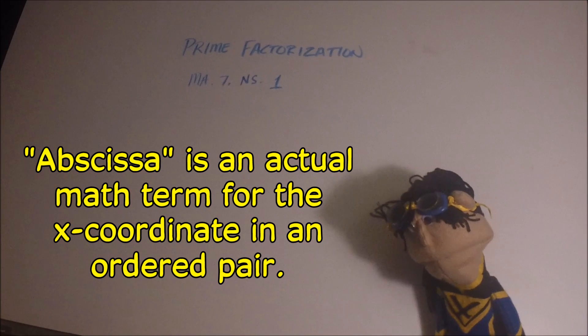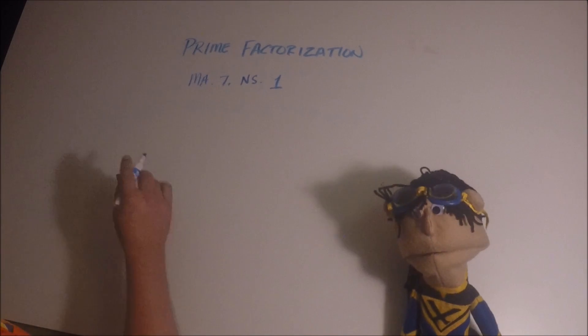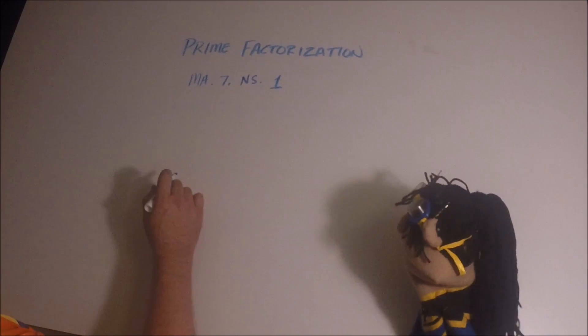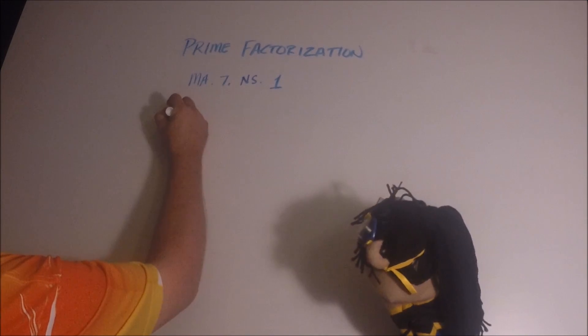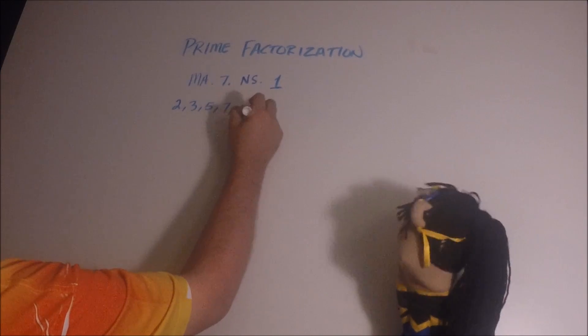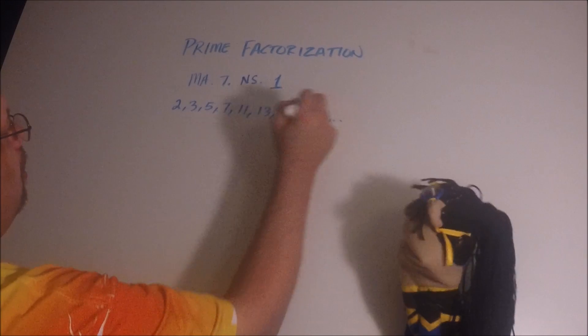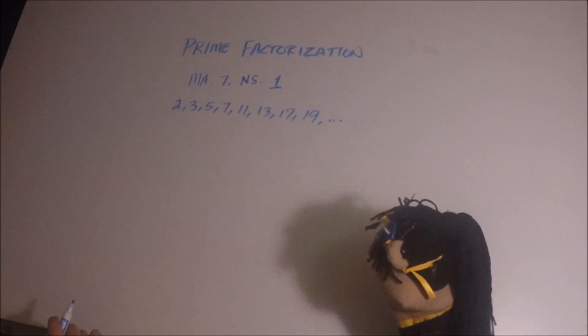Hi! Abcissa is going to help us along doing some prime factorization problems. Now prime factorization is where you break a number down into its prime factors. If you'll recall from your normal math class, prime numbers include 2, 3, 5, 7, 11, 13, 17, 19, and more. But those are the ones that we're going to use for right now to talk about prime factorization.